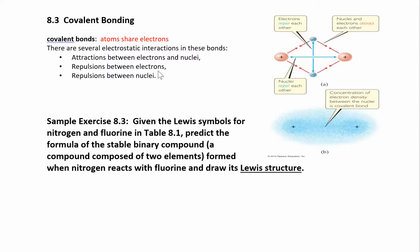Now we can look at covalent bonding. What we're looking at is the non-metals and how they share electrons — they're not going to transfer electrons, they're going to share them. The electrons are what's holding those two non-metallic atoms together. Suppose you had an atom with a proton and an electron, and this other atom also has a proton and an electron. Eventually they get close enough that this proton can see both electrons, and this proton can see both electrons, maximizing attraction while minimizing repulsion between the two protons and the two electrons, because oppositely charged particles attract and like charges repel.